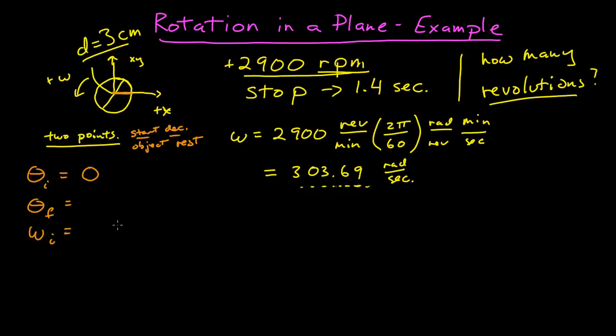My initial angular frequency, angular velocity I know. I apologize, I go back and forth in my mind between oscillations and rotations. Let's call this angular velocity that we know, 303.69 radians per second, and we know our final angular velocity is zero.